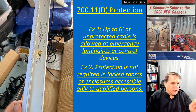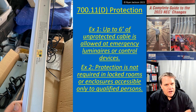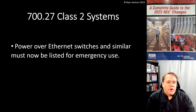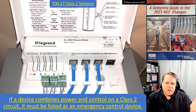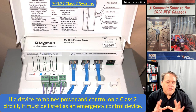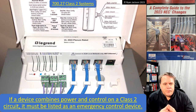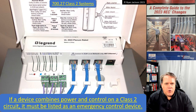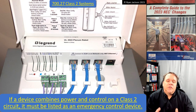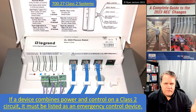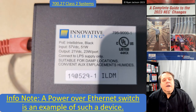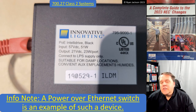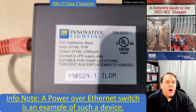So 700.11 tells us how to wire Class 2 luminaires used for emergency lighting. Section 700.27 also talks about Class 2 systems: Power over Ethernet switches and similar devices must now be listed for emergency use. That seems like a very reasonable requirement. If a device combines power and control on a Class 2 circuit, then it needs to be listed as an emergency control device. So if we have a PoE switch being used for emergency lighting, it needs to be listed for emergency system use — again, a very reasonable requirement.